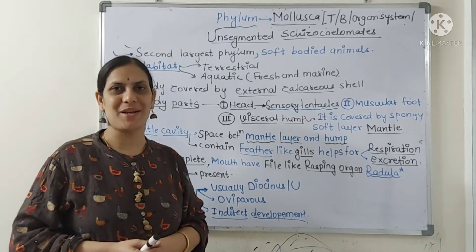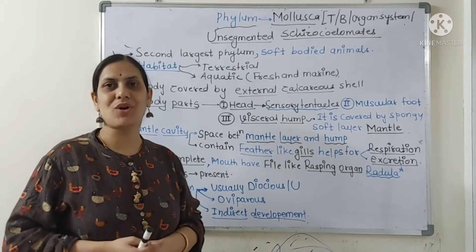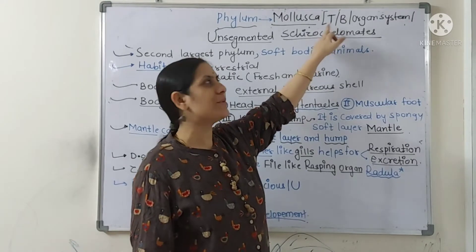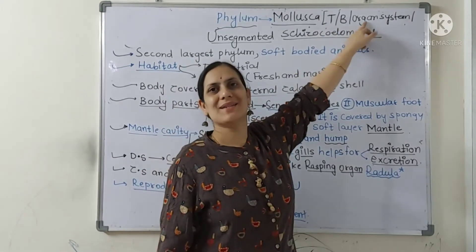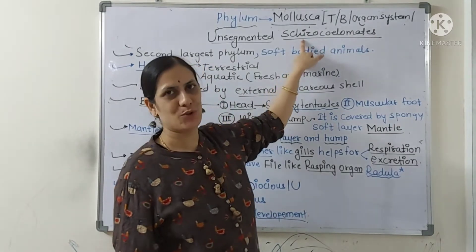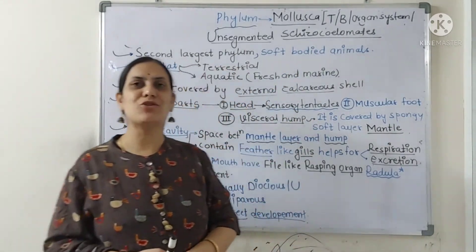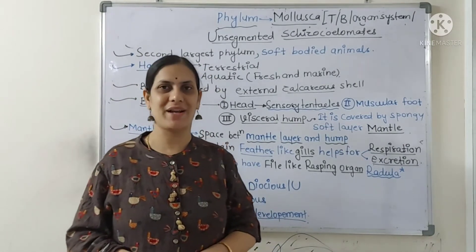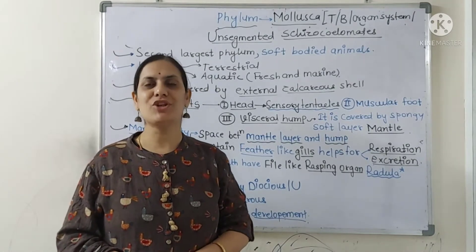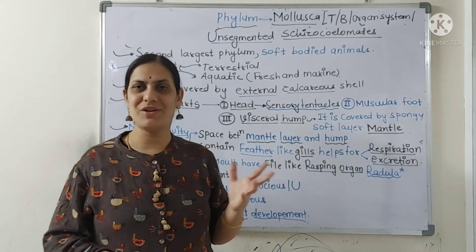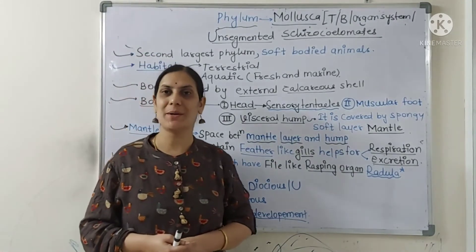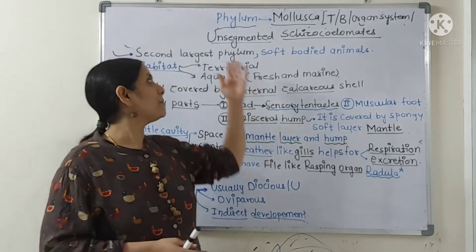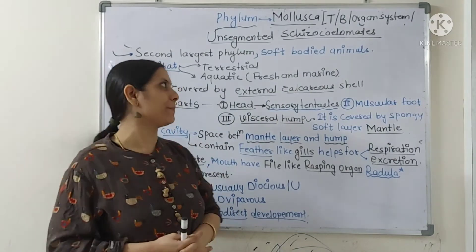All these animals are soft-bodied animals, so we could call molluscans as the soft-bodied animals. They are triploblastic animals having bilateral symmetry, with organ system level of organization. They are coelomates — we know three coelomic phyla: Annelida, Arthropoda, and Mollusca. Annelida and Arthropoda both show segmented body pattern, but molluscans don't show any segments. So molluscans are unsegmented coelomates.